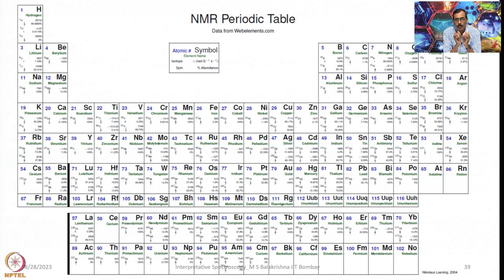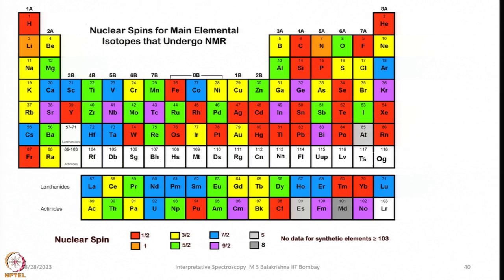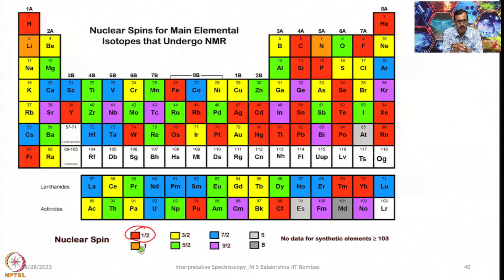This NMR periodic table depicts the elements which have NMR active nuclei, with all the details one needs to use NMR effectively. Another color-coded table shows different nuclear spin values: red is I = 1/2, with plenty of elements including hydrogen and francium. I = 1 has very few — lithium and nitrogen. I = 3/2 in yellow includes beryllium, sodium, potassium, rubidium, and even some lanthanides and actinides. I = 5/2 is in green, I = 7/2 in blue, and I = 9/2 in purple. Most elements have some isotopes which are NMR active.